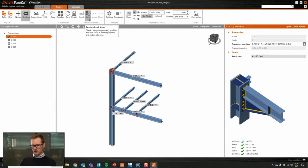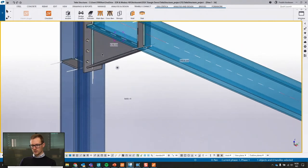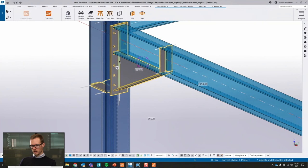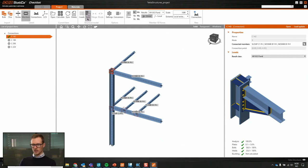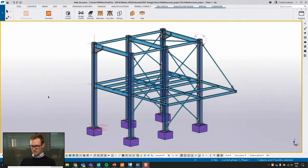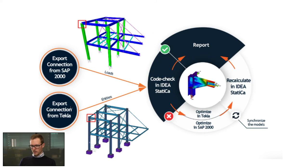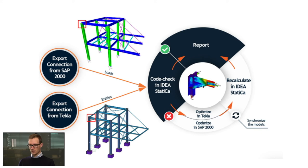There is a Sync button — you can sync your connections if you make changes. If you change a weld in Tekla, you go back to the CheckBot and synchronize all connections, either all at once or one by one. A common question is whether you can make changes in IDEA Statica and apply them back to the Tekla or SAP 2000 model — and the answer is no. It's one way only: you make changes in Tekla and synchronize to IDEA Statica.